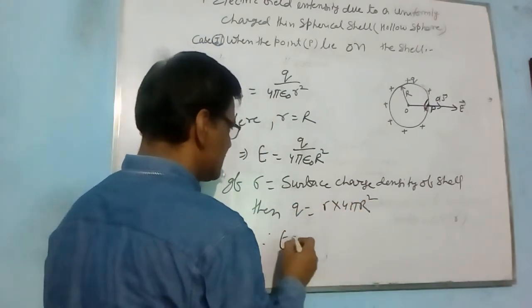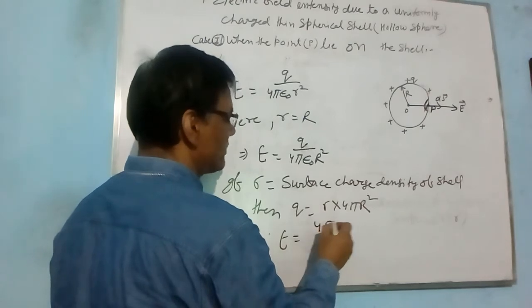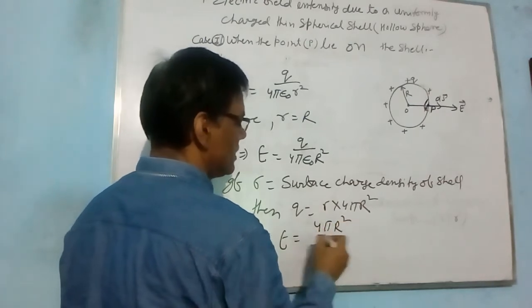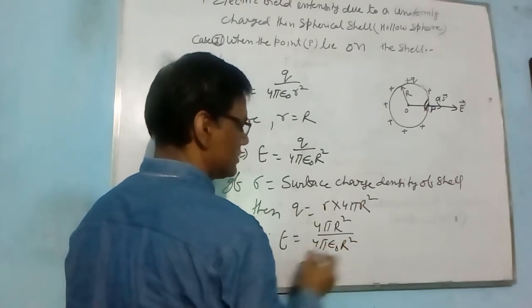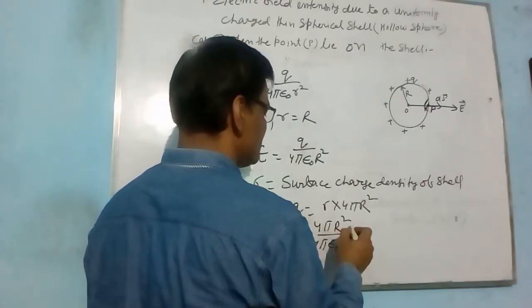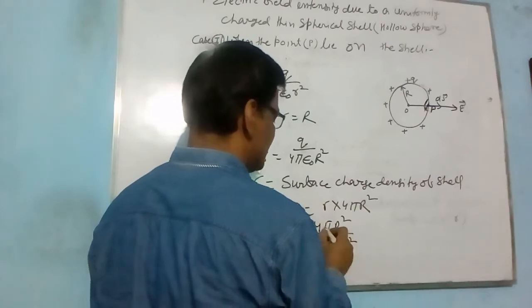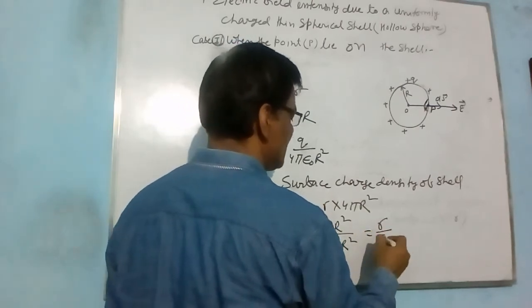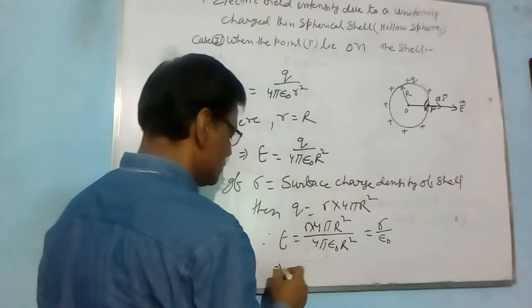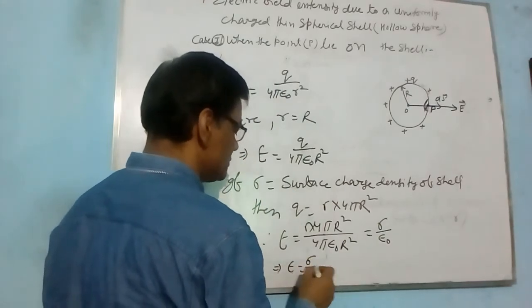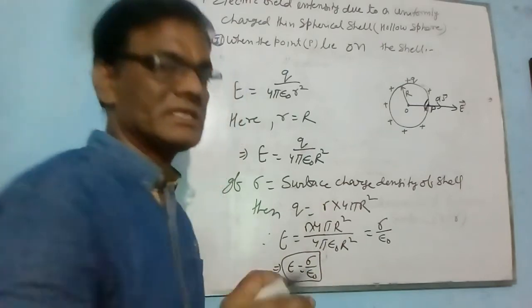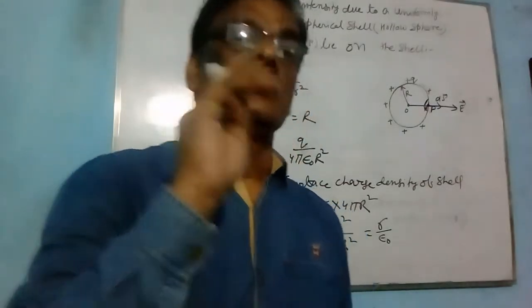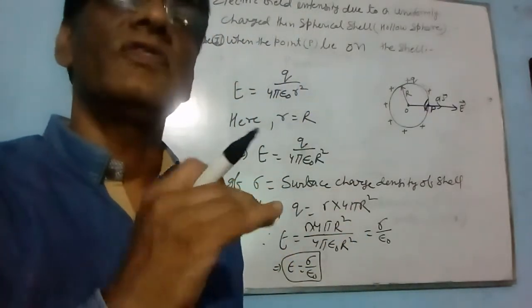Therefore, E is equal to σ·4πR² by 4πε₀R², and that equals to σ by ε₀. So E is equal to σ by ε₀. This is the required expression when the point P lies on the shell.